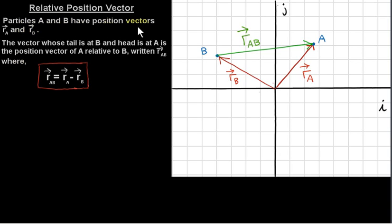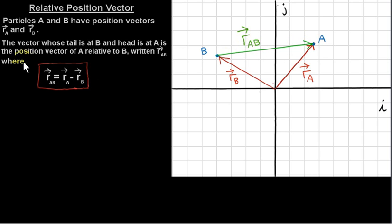Particles A and B have position vectors Ra and Rb, as shown in this diagram. The vector whose tail is at B and head is at A is the position vector of A relative to B, written RAB, where RAB equals vector Ra minus vector Rb.